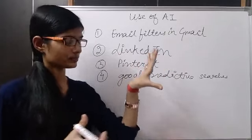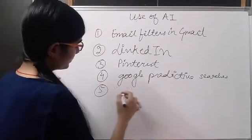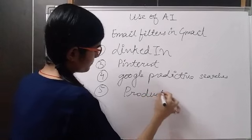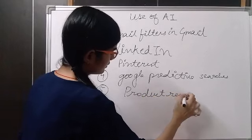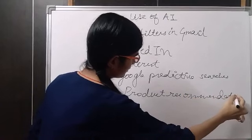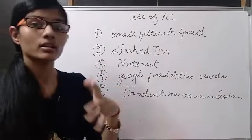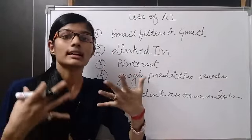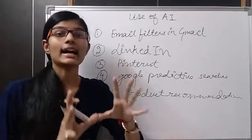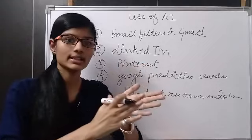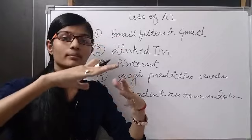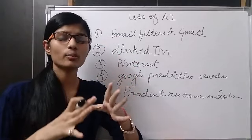Now a fifth example, that is the last one, is product recommendations. So when you search something on Amazon, Flipkart, many sites, on the first day, and then on the second day or after some time when you open that, then you see related searches and the things you searched.